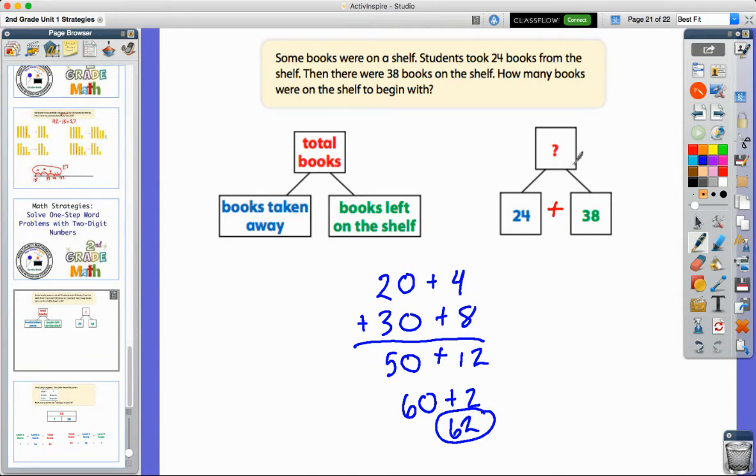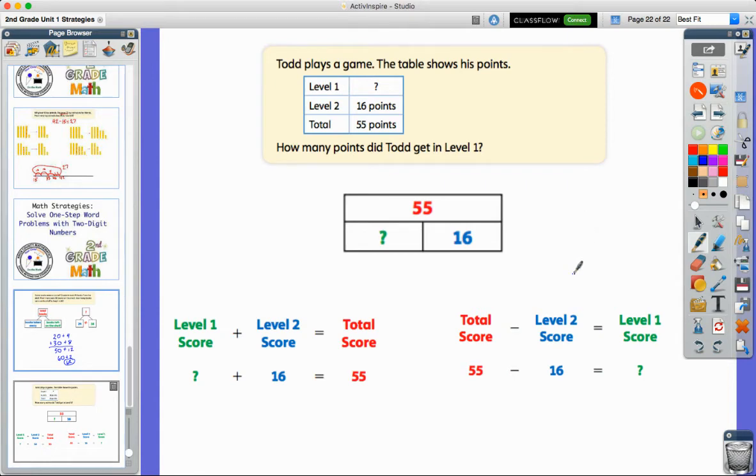So that's an example of how to again, process through that word problem, figure out the parts and the whole helps us determine what operations need to happen. Now there's one more example from the book I want to look at, and that is this one says Todd plays a game and the table shows his points. So we see level one, we don't know what the points are. We see level two is 16 points and then we're given the total. And so again, we can fill in a bar model or a part, part, whole thinking about what we're given in the information. So 55 is the total. That's our whole. We know one of the parts. We know what he scored on level two, but what we're missing is level one.